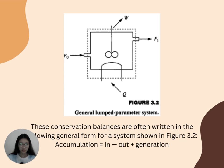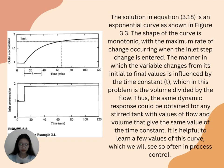The next page is about Figure 3.2, the general lumped parameter system. These conservation balances are often written in the following general form for a system shown in Figure 3.2: accumulation equals in minus out plus generation.